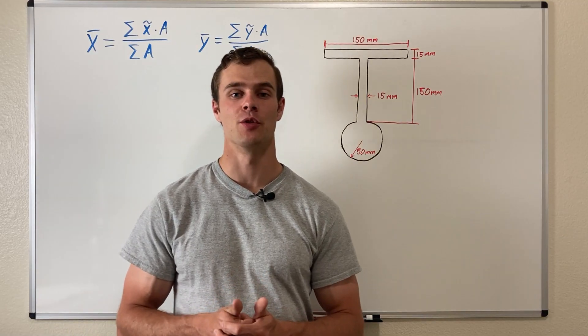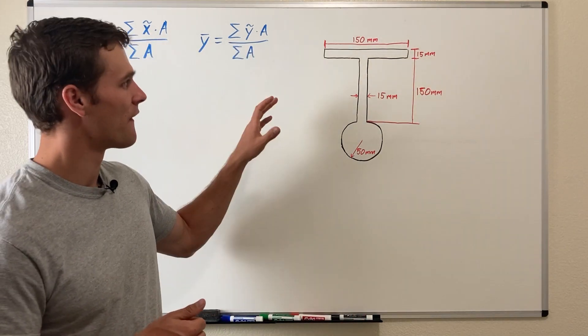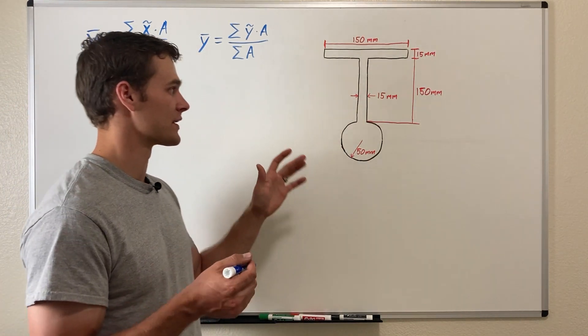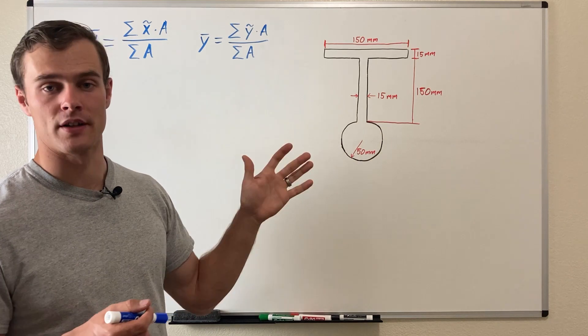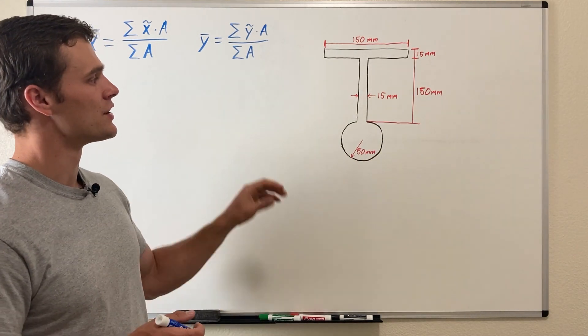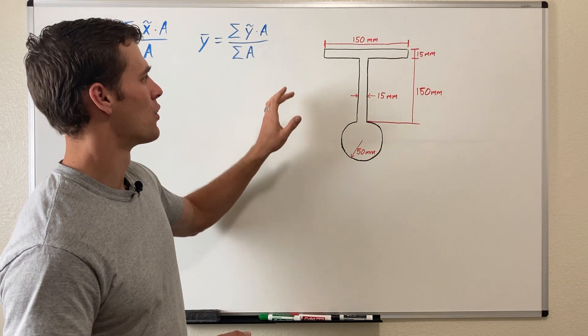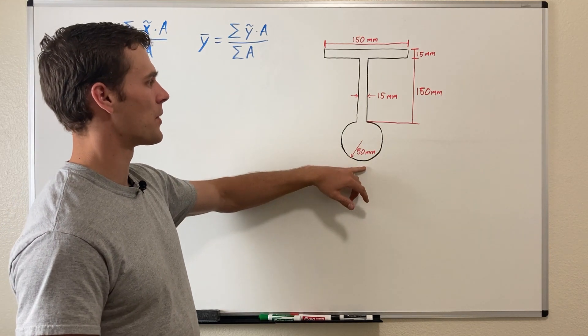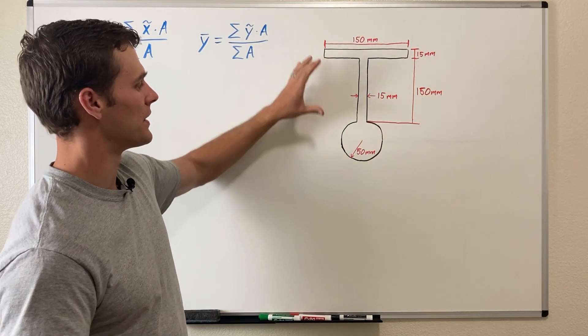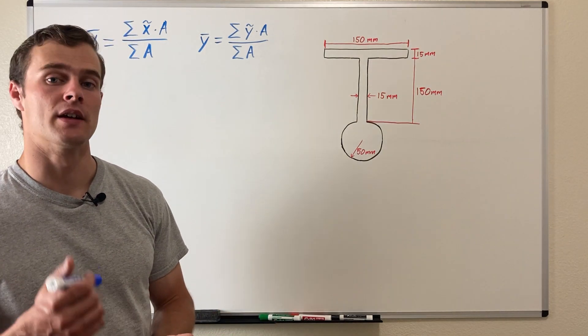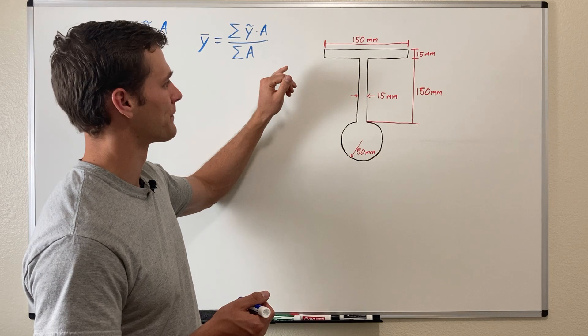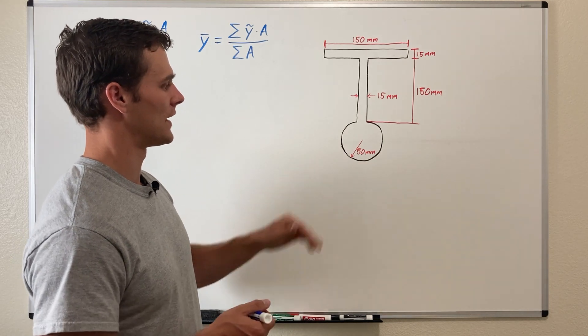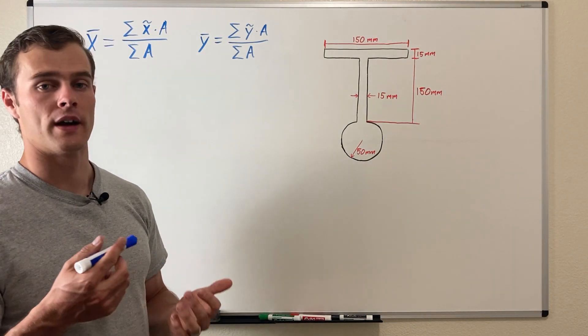The first thing we want to do is establish our coordinate system for this shape. Our centroid coordinates will be based on that coordinate system. If you need to find the centroid with respect to a certain part of the shape, like measured from the top or bottom, it might be best to establish your coordinate system with one of the axes touching and being along one of those lines.